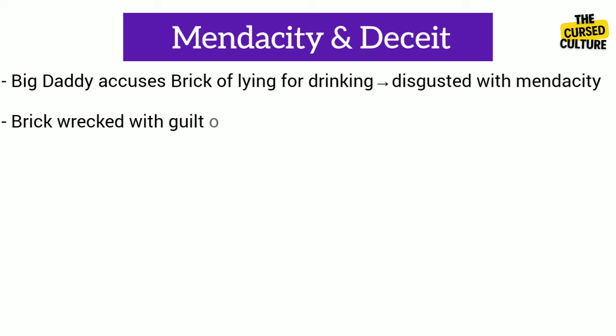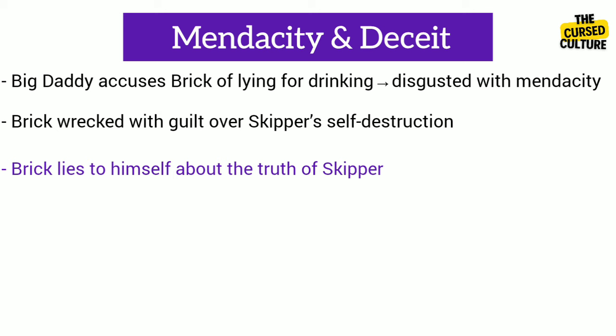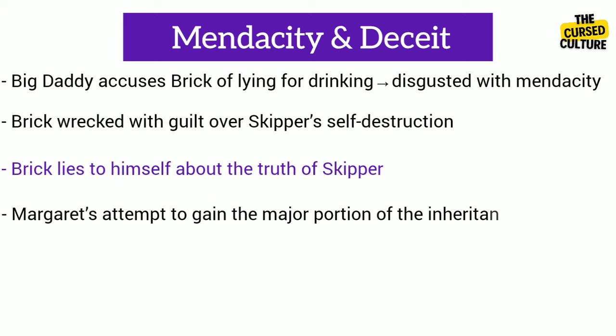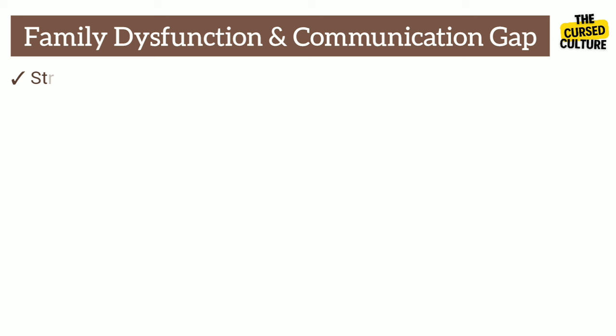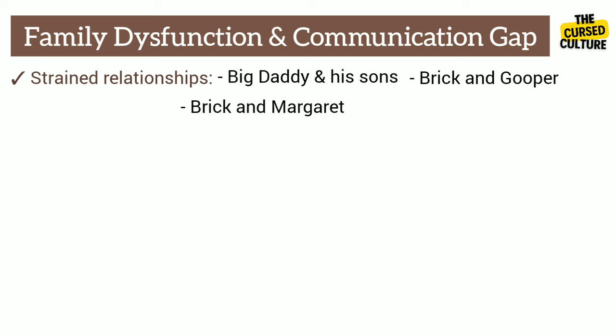The theme of mendacity and deceit revolves around the characters' tendency to lie and hide their true feelings or motives. Big Daddy accuses Brick of lying about the cause of his drinking — claiming disgust with mendacity — when in truth he is wrecked with guilt over Skipper's self-destruction. Brick lies to himself about the truth of Skipper and his relationship. Maggie frequently tries to manipulate situations through dishonesty, such as her attempt to gain a major portion of the inheritance by lying about being pregnant. Everyone deceives Big Daddy about the truth of his health. The Pollitt family is filled with misunderstandings and lack of open communication, highlighting the dysfunctional nature of the family.